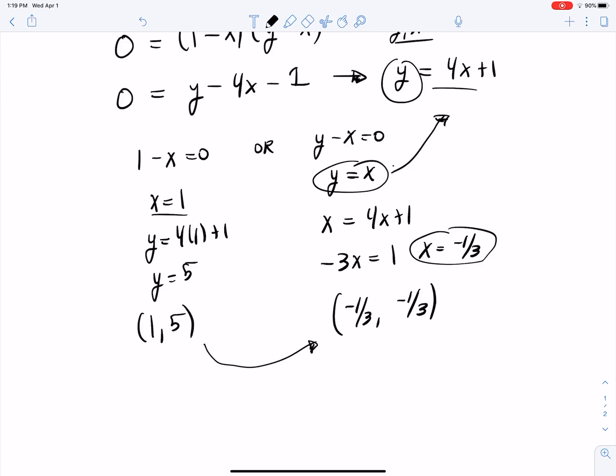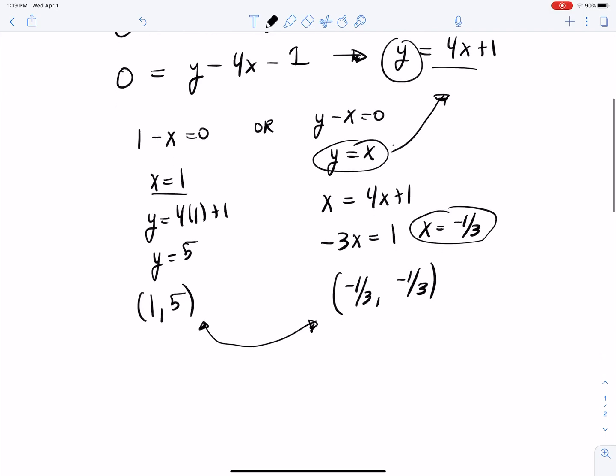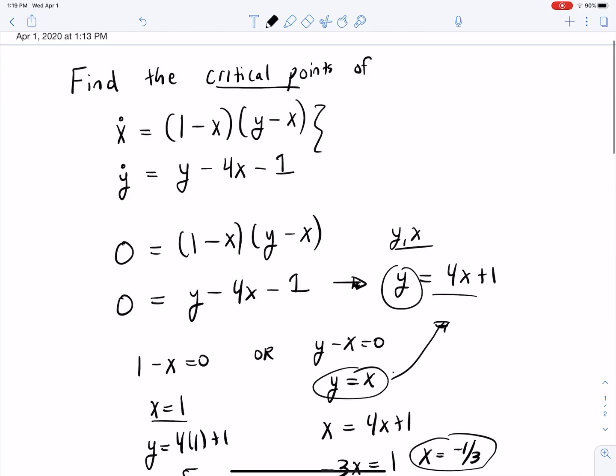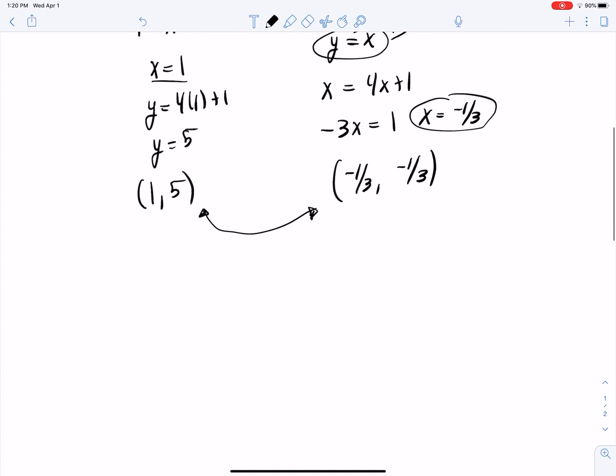And those are my two fixed points for this system. So what that means, those points, if I start with the initial condition x equals one, y equals five, and I run that through, then I'm gonna stay at that point always. I'll never leave that point. And same thing for negative one third, negative one third. I start at either one of those two points, then I stay there forever.